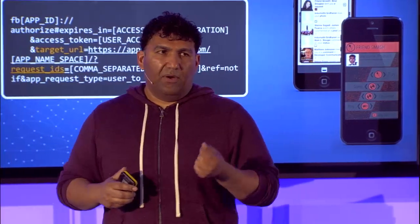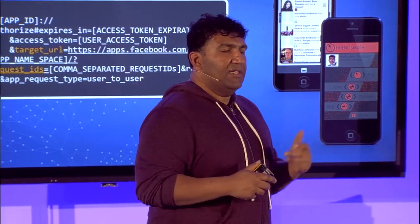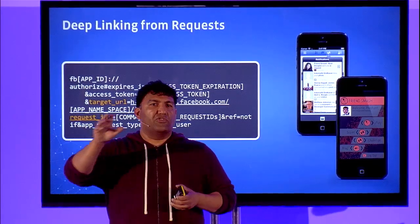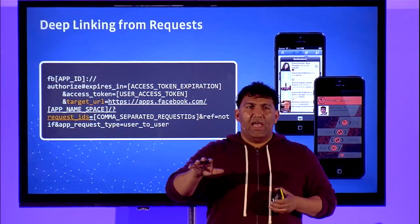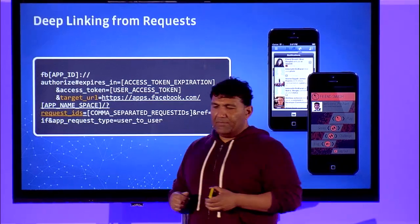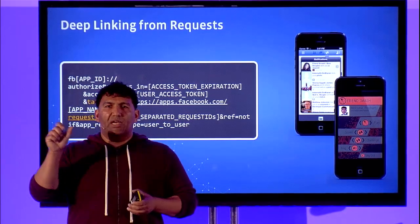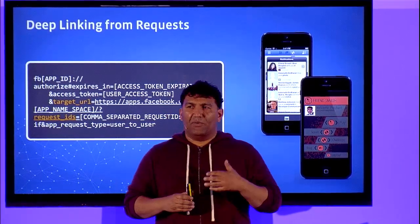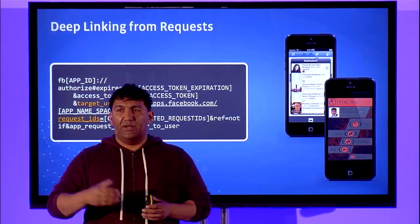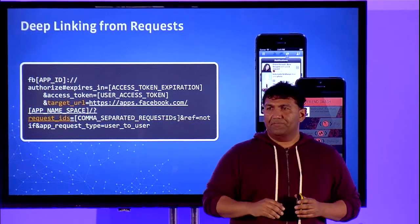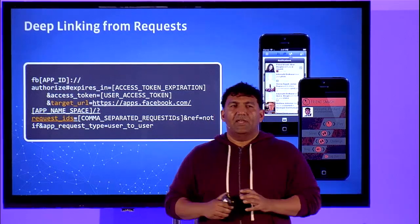The other really important thing is supporting deep linking from requests. In the context of news feed and timeline, when a friend sees a shared story and engages with it, they're taken to the app store or directly to the app. In the requests context, deep linking enables you to parse an incoming request and put the user in a pertinent location inside your game. For example, in Friend Smash, I could challenge Bear and the game could immediately start with me playing her when she engages with that notification, rather than starting randomly in a different location.